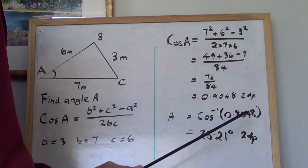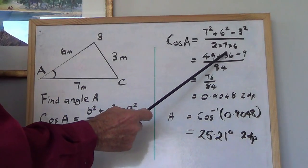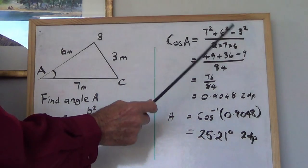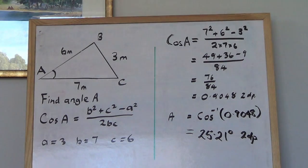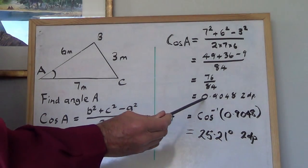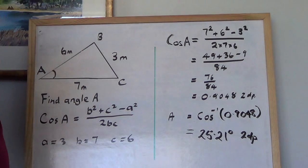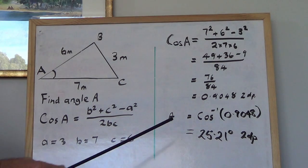Bottom line is 48. Top line is 49 plus 36. Take 9 from 49 to get 40 plus 36 to 76 over 84. Divide it out. There's the result on the calculator: 0.9048 and a few decimal places. Then you just have to find the inverse cos of that.